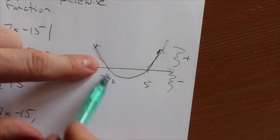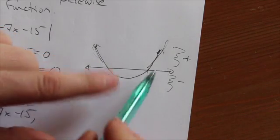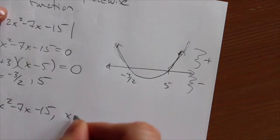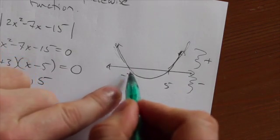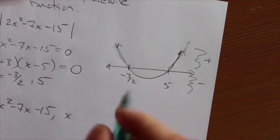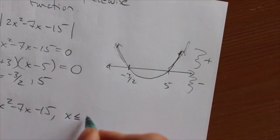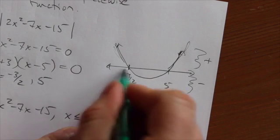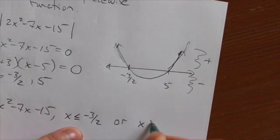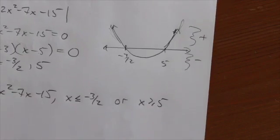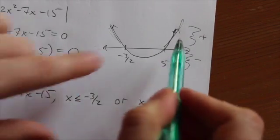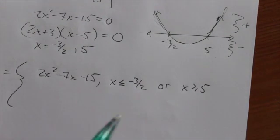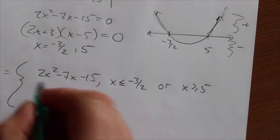It dips below in between the two roots, but it's positive up here. So it's positive when the x values - because remember, negative 3 halves is an x value - when x is less than or equal to negative 3 halves, or x is greater than or equal to 5. I'm going to include the zero here. In those intervals right there, the function shoots up above the x-axis and it's positive, so the absolute value won't do anything to it.